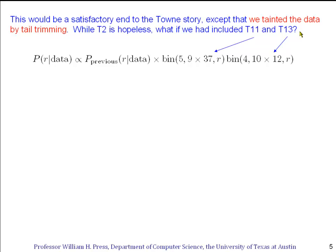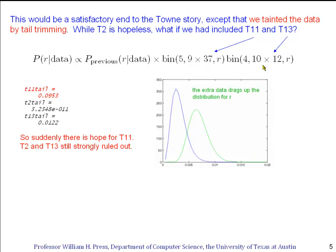That is to say, the model that we used would be the previous model times these two extra binomial factors to include T11 and T13 in the model. Well, instead of getting the blue curve here for R, we would have gotten this rather different green curve, because T11 and T13 simply have more mutations, and that would have raised our estimate for the mutation probability.